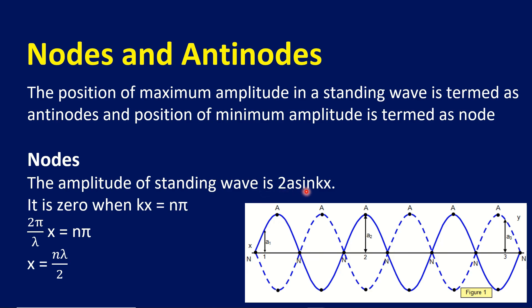The amplitude of the standing wave is 2a sin(kx). The amplitude is minimum (zero) when kx equals n times pi, where n is an integer.